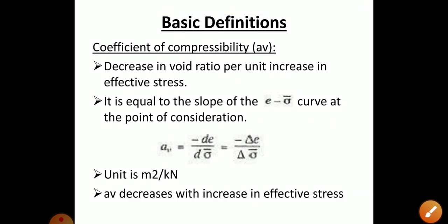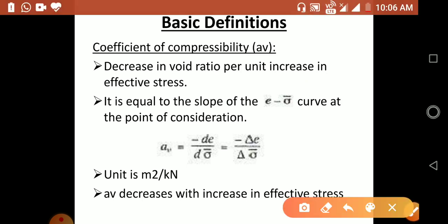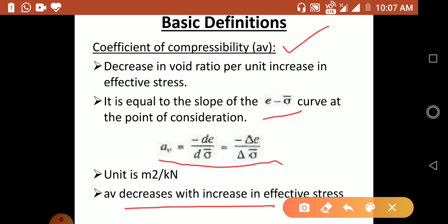The basic definitions required for the consolidation test: first is the coefficient of compressibility, av. It equals the slope of the e–σ̄ curve at the point of consideration, given by: av = −Δe / Δσ̄. av decreases with increase in effective stress, as indicated by the negative sign. Its unit is m² per kN.